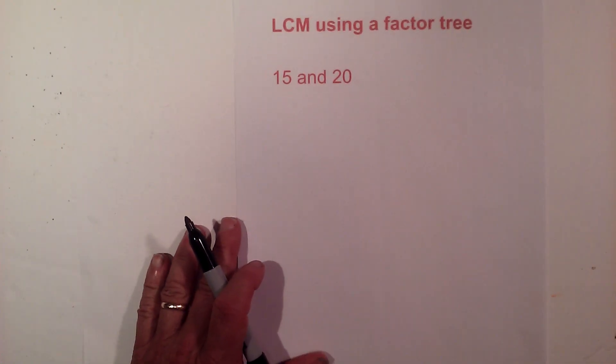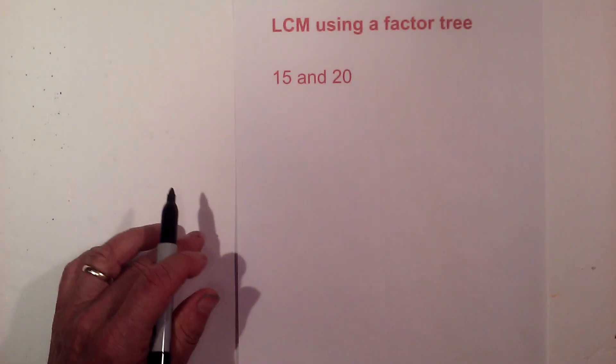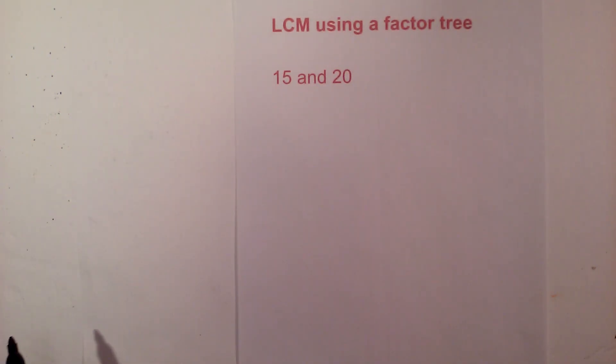In this video let's find the LCM or the least common multiple of 15 and 20. I like to use a factor tree so let's get started here.